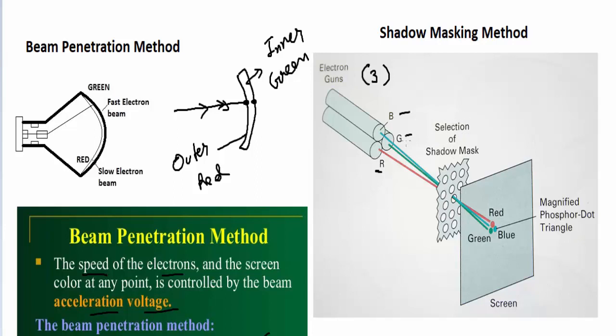After going through this metal plate, the phosphor screen will get pixels or dots. Basically, what happens is in one pixel, it will have red, blue, and green colors in it.